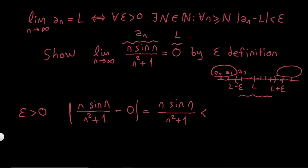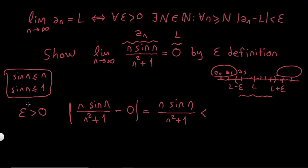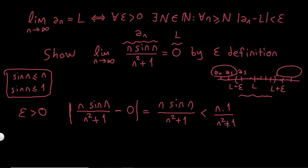I know two commonly used inequalities for the sine function: |sin(n)| ≤ n for all n, and |sin(n)| ≤ 1 for all n. Since I want to make the numerator small, using sin(n) ≤ n would not be useful here. So I will use |sin(n)| ≤ 1, giving me n · 1 / (n² + 1).